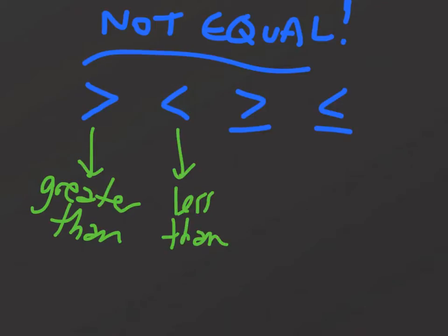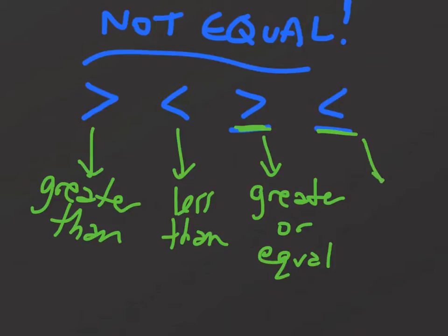The only difference is when you have these lines underneath it, it means it could also be equal to. So this one would be greater than or equal to, and this last one would be less than or equal to.